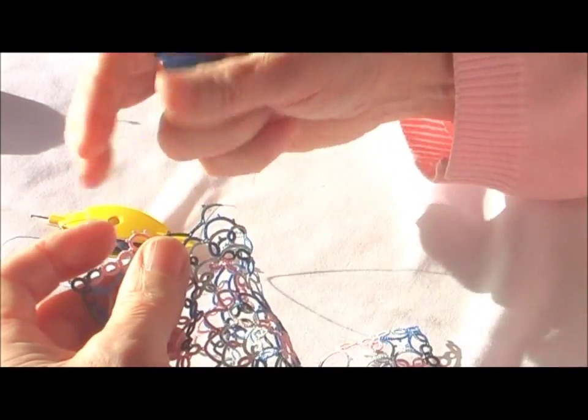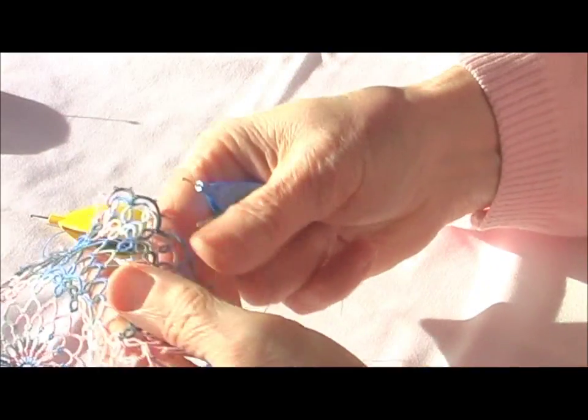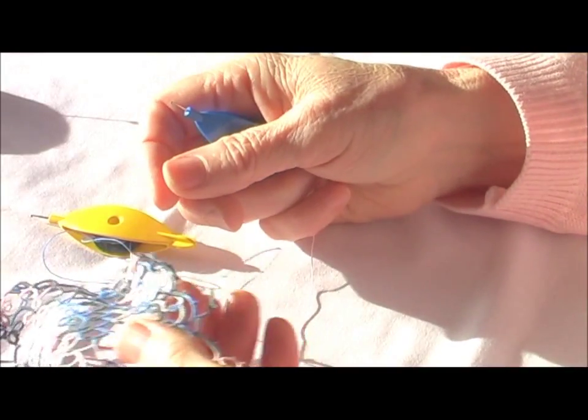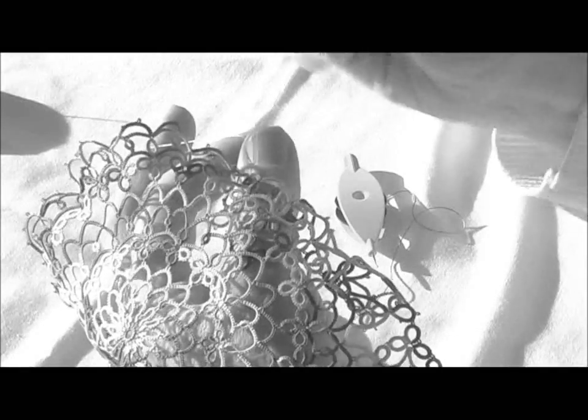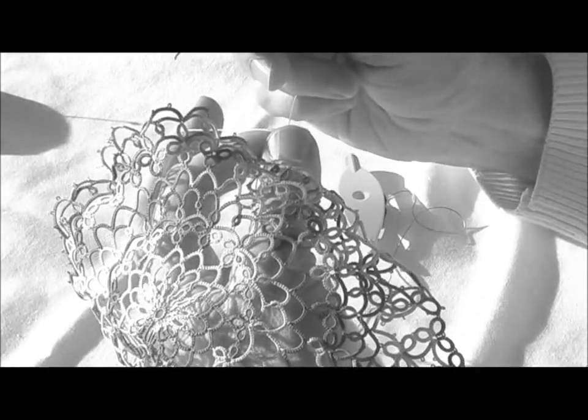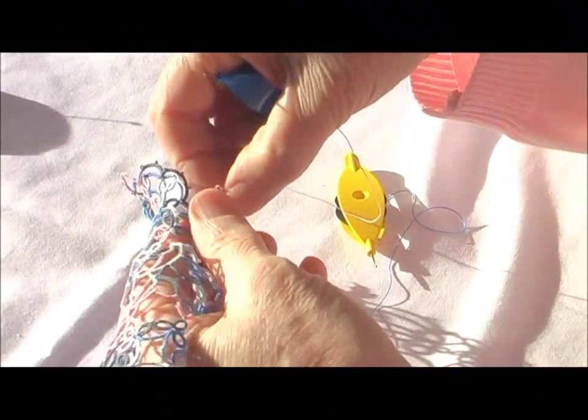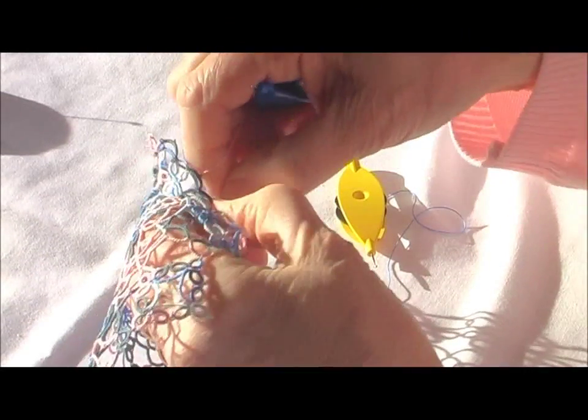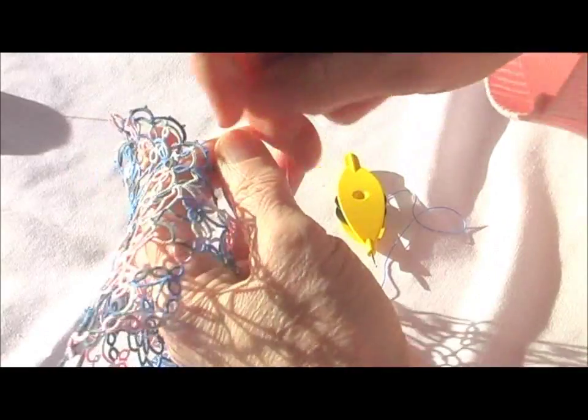Right, now we turn the work over and start the clover. My first ring is ten double stitches, picot, seven double stitches, picot, three double stitches. Don't turn the work over, do another ring straight away.